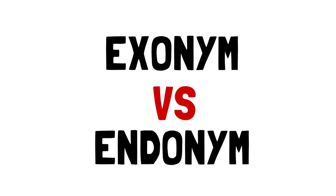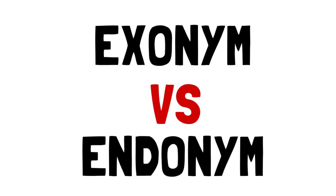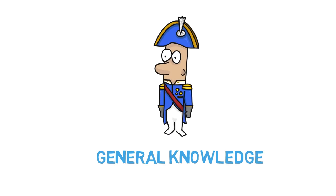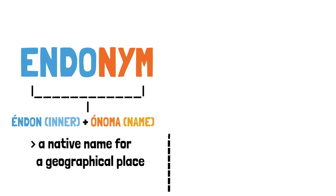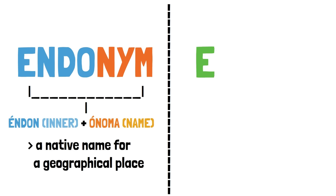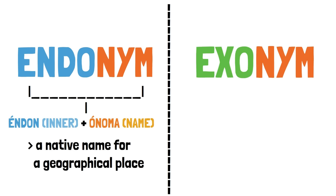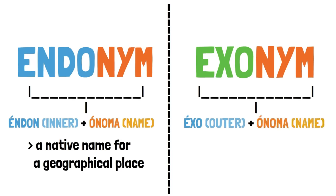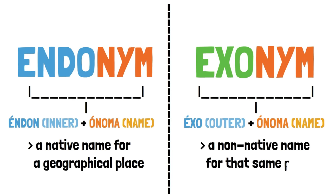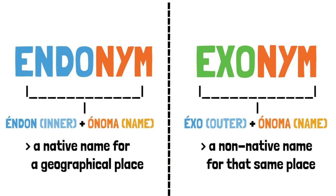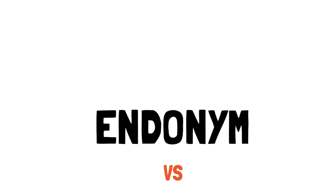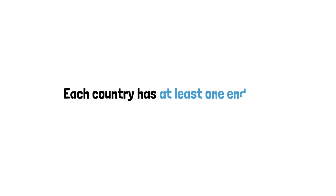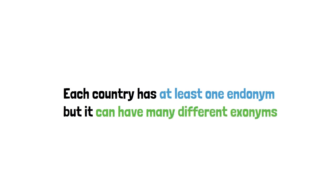What I'm talking about is the difference between an exonym and an endonym. An endonym, from the Greek endon meaning 'inner' and onoma meaning 'name,' is a native name for a geographical place, meaning that it is used inside that place by its people. While an exonym, from the Greek exo meaning 'outer' and onoma also meaning 'name,' is a non-native name for that same place, meaning that it is only used outside of it by people that don't live there. Each country has at least one endonym — it has to call itself something — but it can have various exonyms throughout the world.